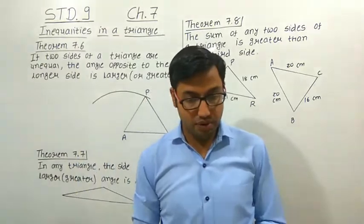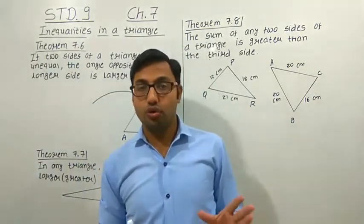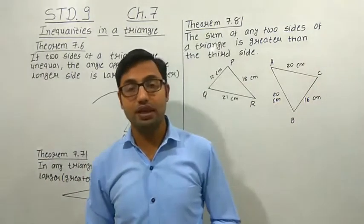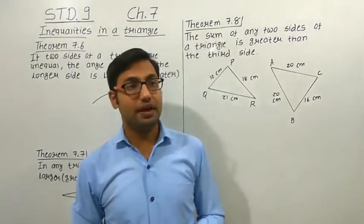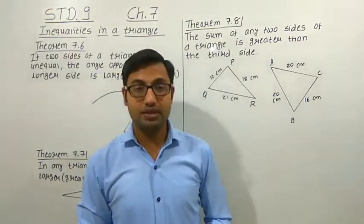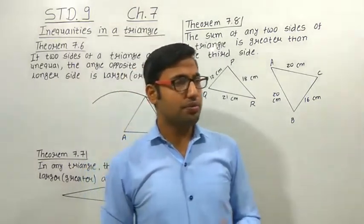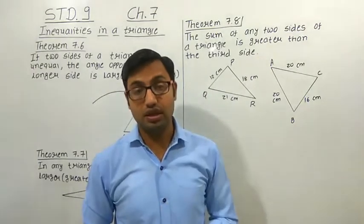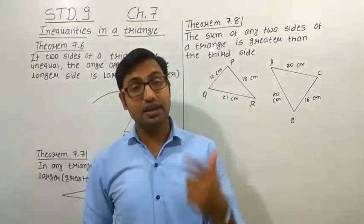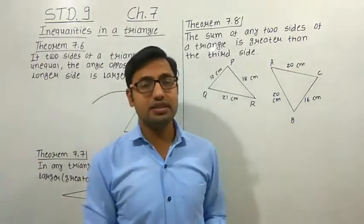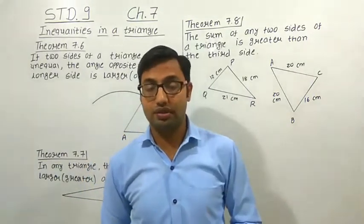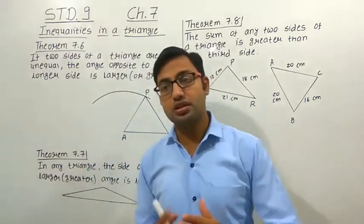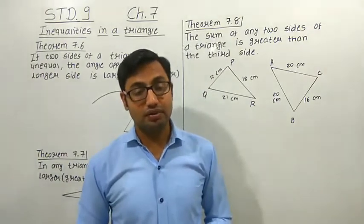Till now we have studied about the equalities of two triangles — proving that two triangles are completely equal, their sides and their respective angles. But here some triangles do not have any equal sides; we call that type of triangle a scalene triangle. If we have two line segments, we can compare them and say one is smaller or larger.